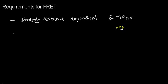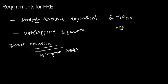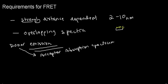The second requirement is overlapping spectra, which means that the donor emission spectrum needs to overlap with the acceptor absorption spectrum. When you think about it, it makes sense: the acceptor needs to accept energy from the donor and it can only accept within its absorption spectrum, and the donor can only transfer within its emission spectrum. So these two need to overlap.